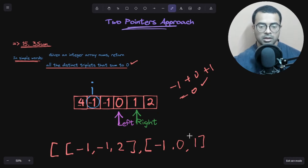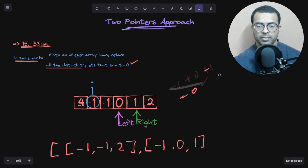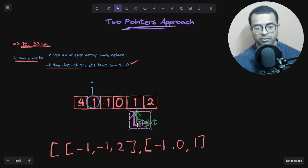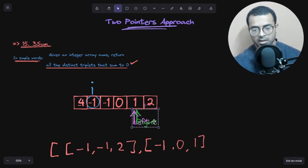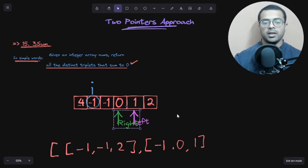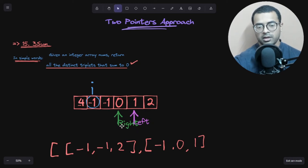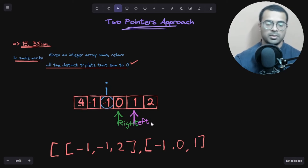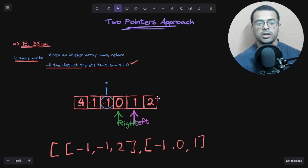Now left is at zero and right is at one. Minus one plus zero plus one equals zero — another valid triplet! We append minus one, zero, one to the result. After this, moving left forward or right backward would cause them to collide, so the inner while loop ends and i advances.